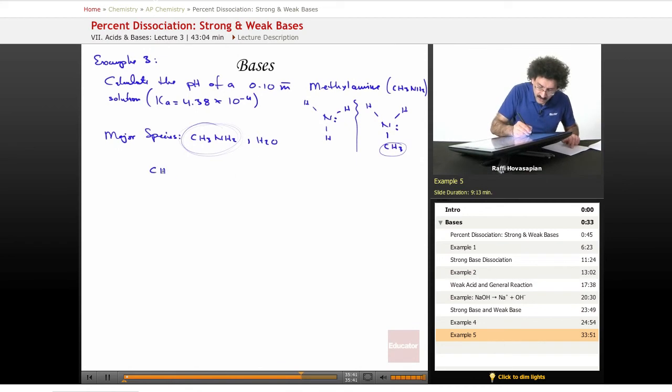Let's write our CH3NH2 plus HOH, or you can write H2O, not a problem. Same equation, plus water goes to CH3NH3 plus, just add a hydrogen, stick a plus charge on it, plus OH minus. We have an initial, we have a change, we have an equilibrium. 0.10, nothing, 0, 0, before anything happens.